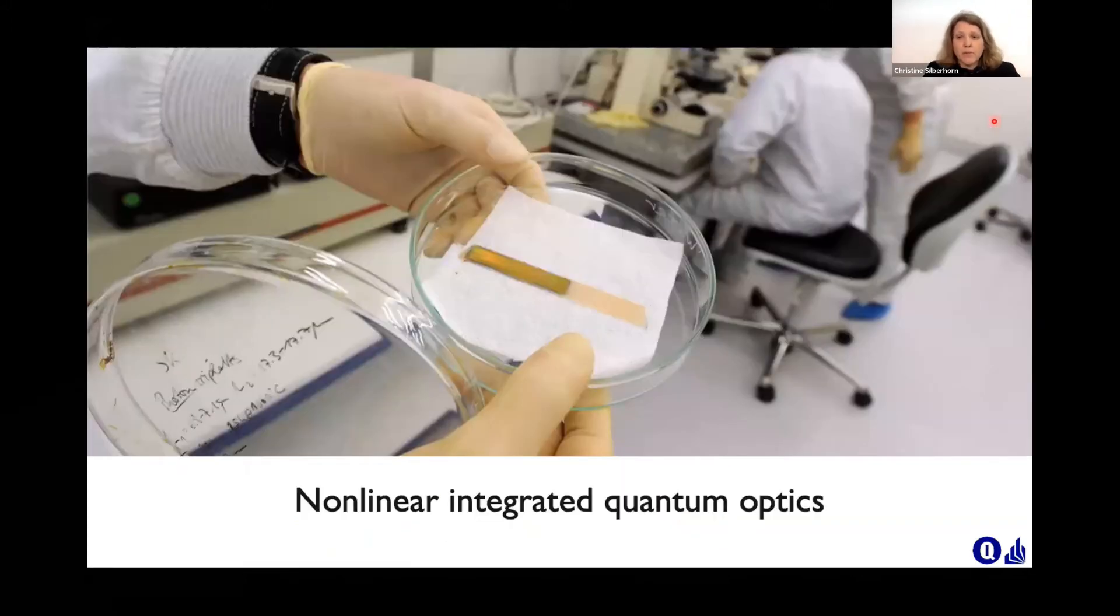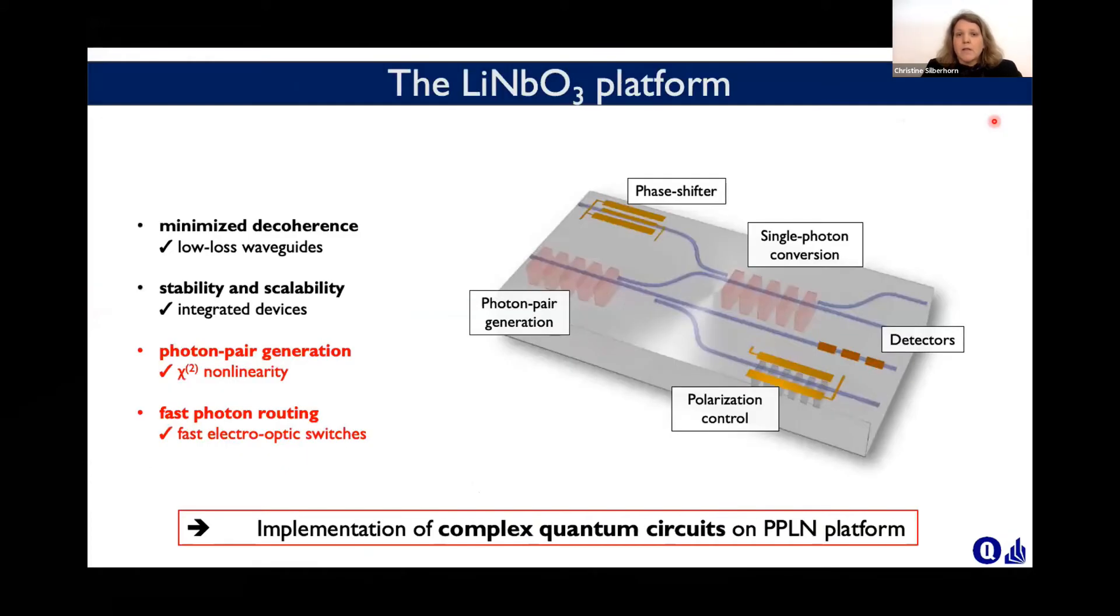So let me get started with integrated quantum optics. I would like to start right away that we are talking about non-linear integrated quantum optics. The platform you're looking at here is a CHI-2 platform, mostly on lithium niobate. The reason why I want to do that is we need minimized decoherence, low-loss waveguides. But one thing which is tricky is efficient photon pair generation and fast photonic routing so that you can have electro-optic control.